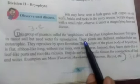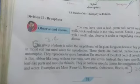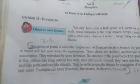This group of plants is called the amphibians of the plant kingdom because they grow in moist soil but need water for reproduction. Just as a frog — the best example of an amphibian — can live both in water and on land, Bryophyta is the category of plants that can live both in water and on land.